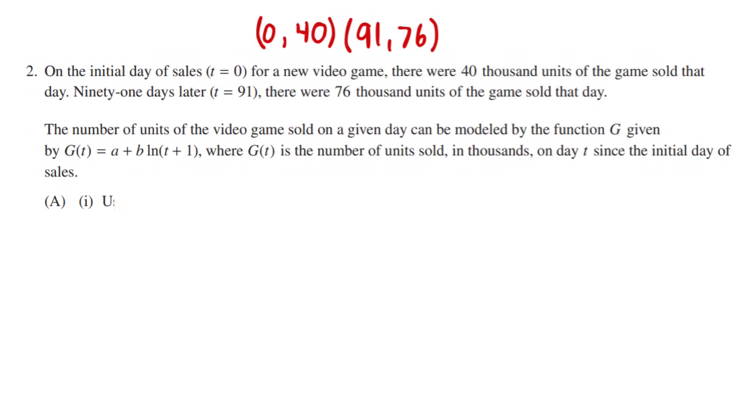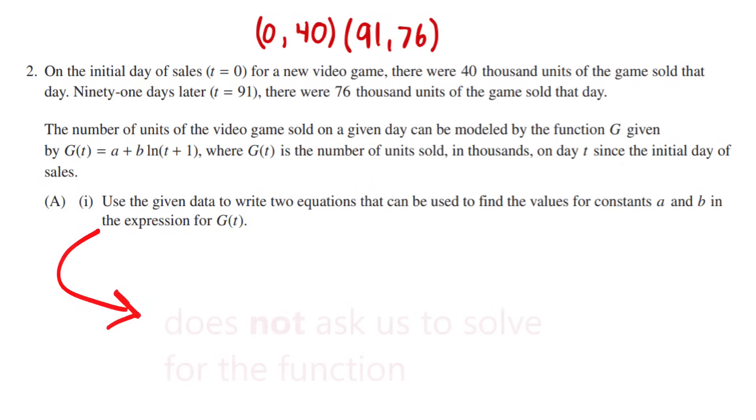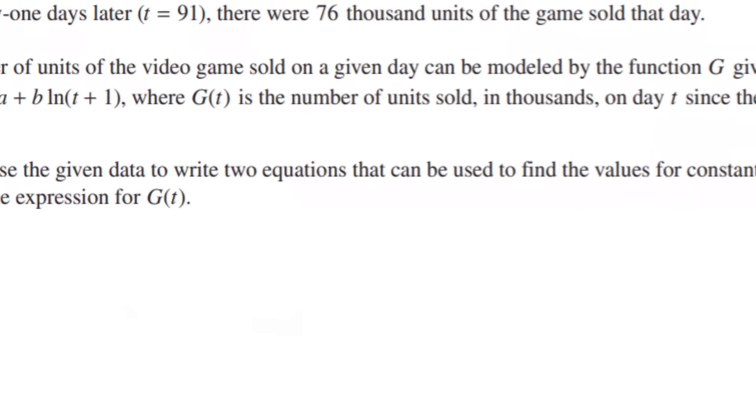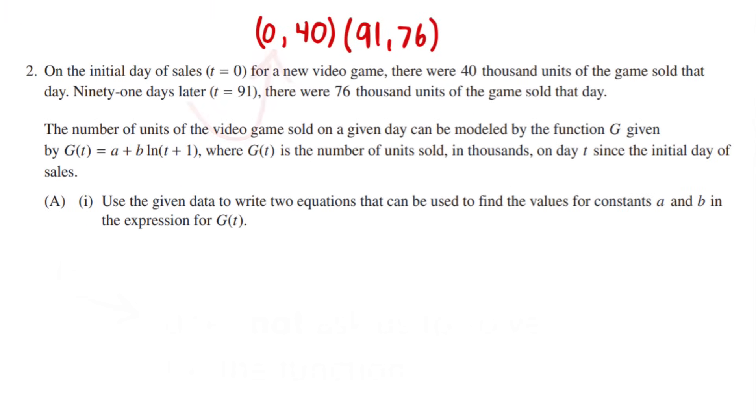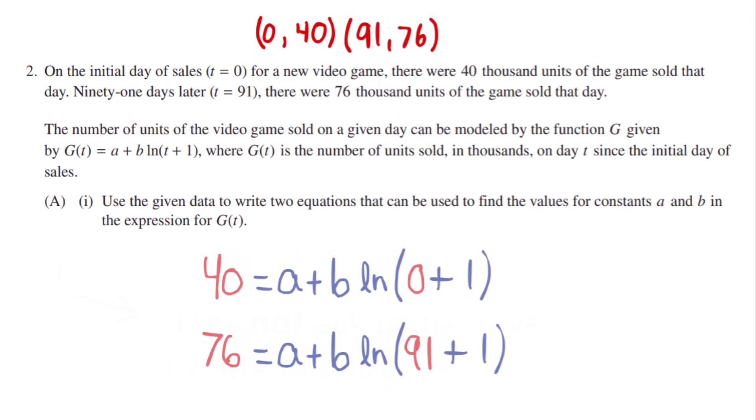Now, let's read part a. Use the given data to write two equations that can be used to find the values for constants a and b in the expression for g(t). Alright, so I bet all of you are overthinking this way too much. This question does not ask us to solve for the function. It just asks us to write two equations that can be used to solve a system of equations to solve for the function. So this is easy. We plug in when t equals 0, and when t equals 91. So let's plug those into the skeleton equation, and that's the answer for the first one.